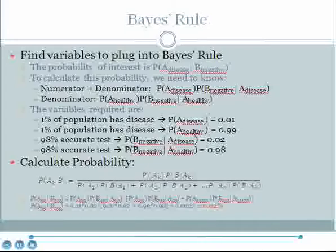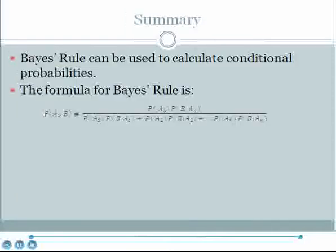Thus, the probability of a false negative is 0.02% for this 98% accurate test. In summary, Bayes' Rule can be used to calculate conditional probabilities. You should copy down Bayes' Rule and become familiar with how it works. However, there is no need to memorize Bayes' Rule, as it can be looked up in a table or statistics manual.